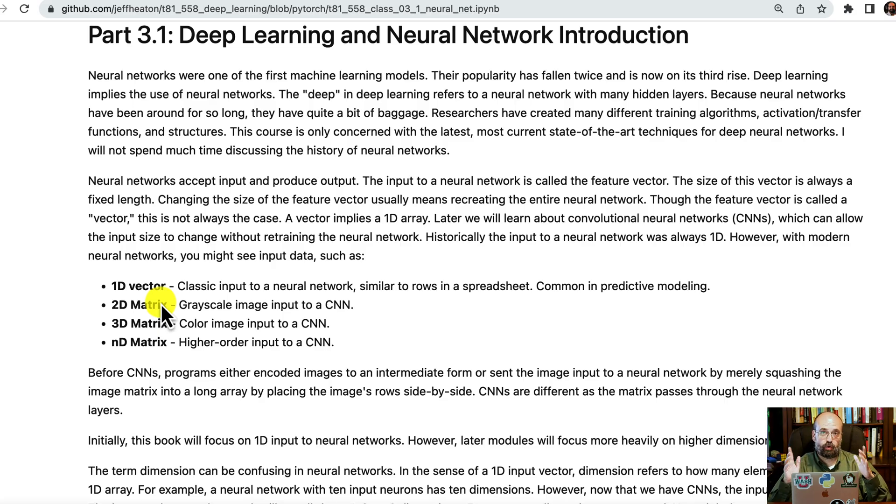One of the things that really separates neural networks from other machine learning models, like a support vector machine, is that the input to the deep neural network is a tensor. So it could be a single value, a 1D array of values, a 2D array of values, or a cube, or even something that you can't visualize in our three-dimensional space. This allows the neural networks to work particularly well on things like speech, computer vision, and many other types.